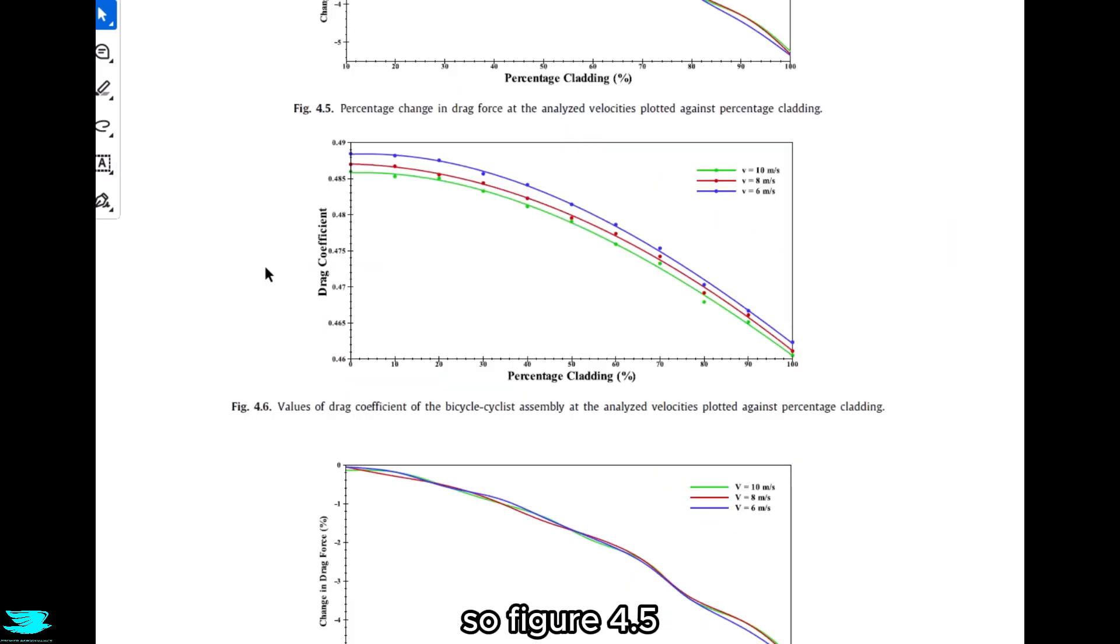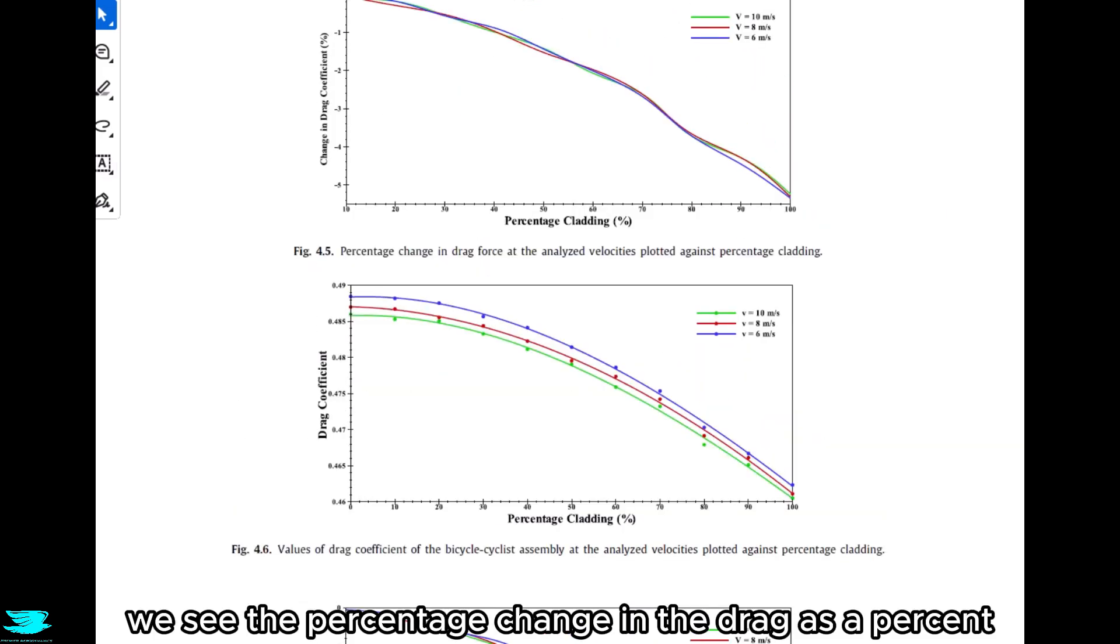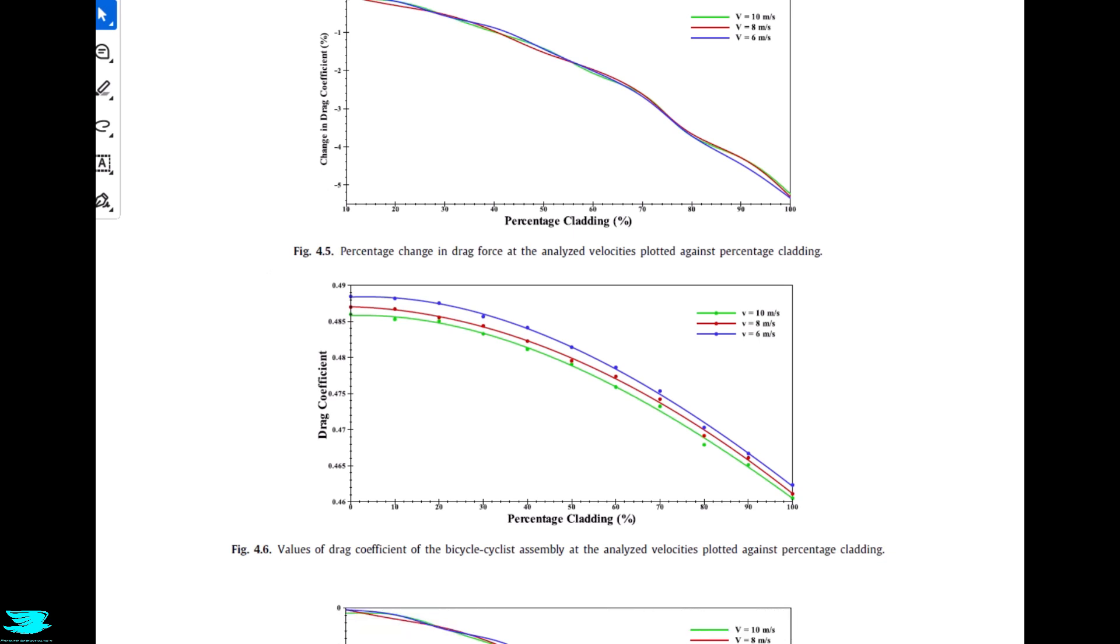In figure 4.5, we see the percentage change in the drag. I should note that the y-axis says the drag coefficient, but I'm pretty sure that's a typo and it's actually the overall drag. And this shows that we're seeing up to about a 5% drop in the drag with completely covered rims. That is a big gain and could be the difference between being the winner and being the first loser.